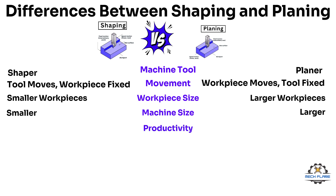Productivity: The shaper has short stroke lengths, so it provides a low material removal rate, thus shaping is less productive. The planer has longer stroke length and can take heavy cuts, so the material removal rate is high, thus planing is more productive.